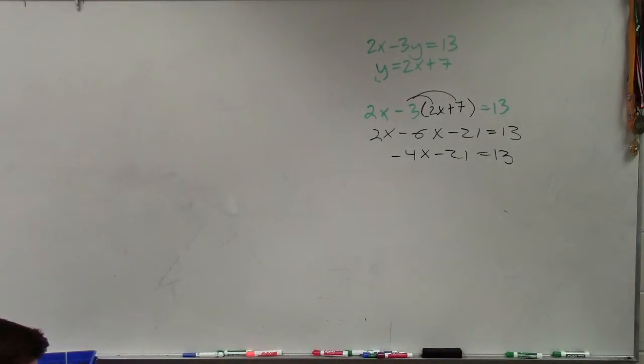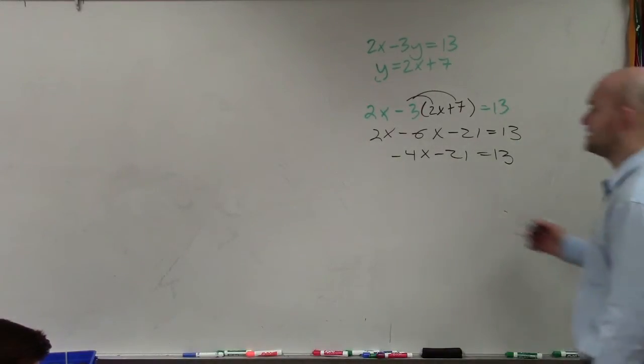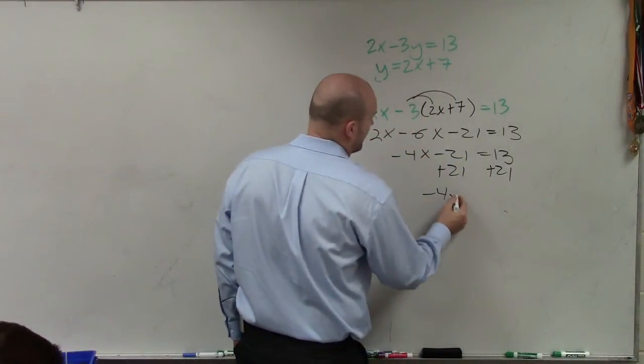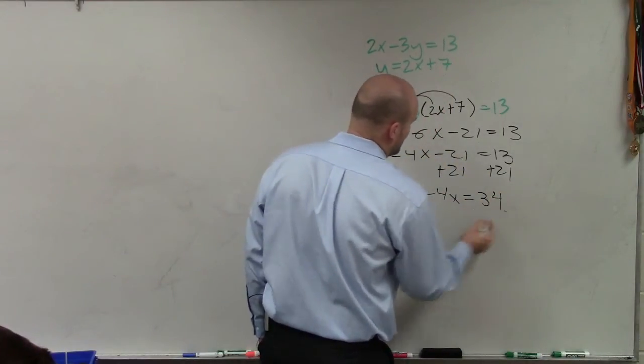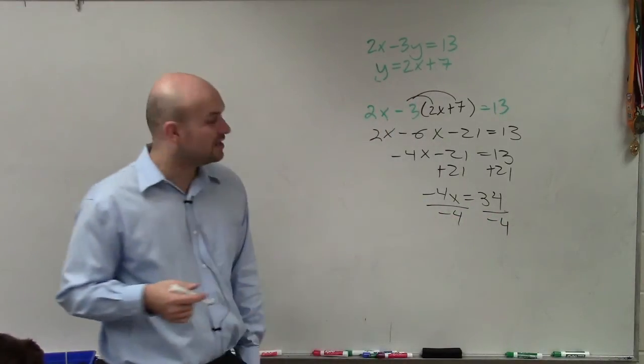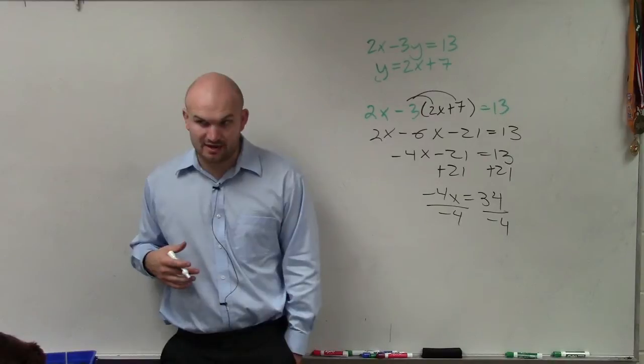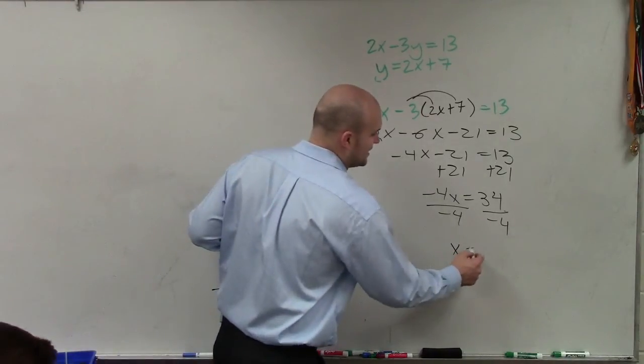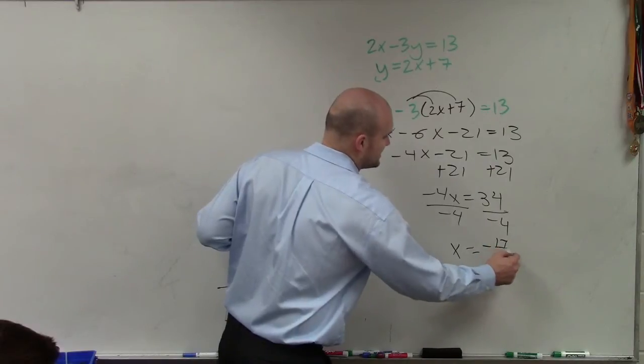And now, just to go ahead and solve for x, I add 21, negative 4x equals 34, divide by negative 4. Negative 4 does not evenly divide into negative 34, so I will just reduce the fraction, so I get x equals negative 17 halves.